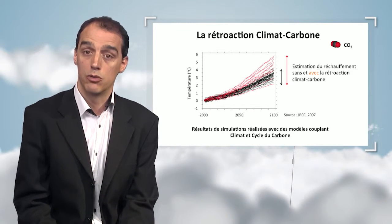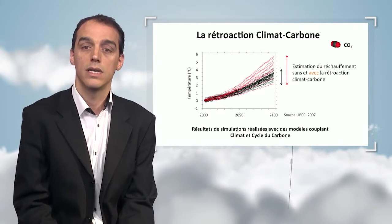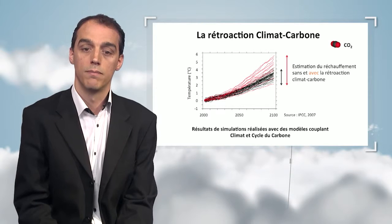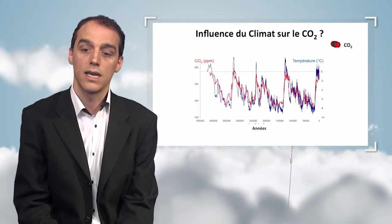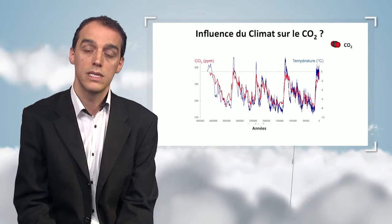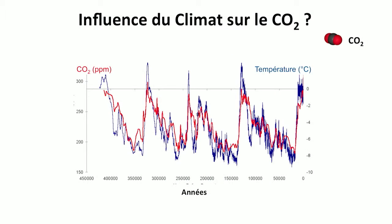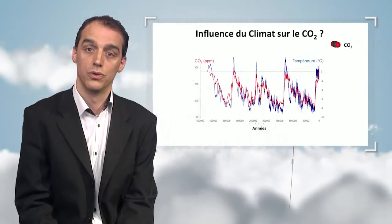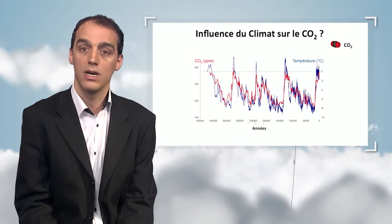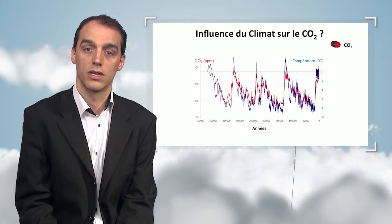Do we have any indication from past climates over the last few decades telling us that climate and carbon cycle — or climate and CO2 — are coupled? The first indication comes from the glacial-interglacial cycles over about a million years. Temperatures have evolved in phase with high CO2 atmospheric concentration during interglacial periods (the peaks) and low CO2 values in the nadirs. Climate variations therefore directly influence the carbon cycle and the climate cycle.